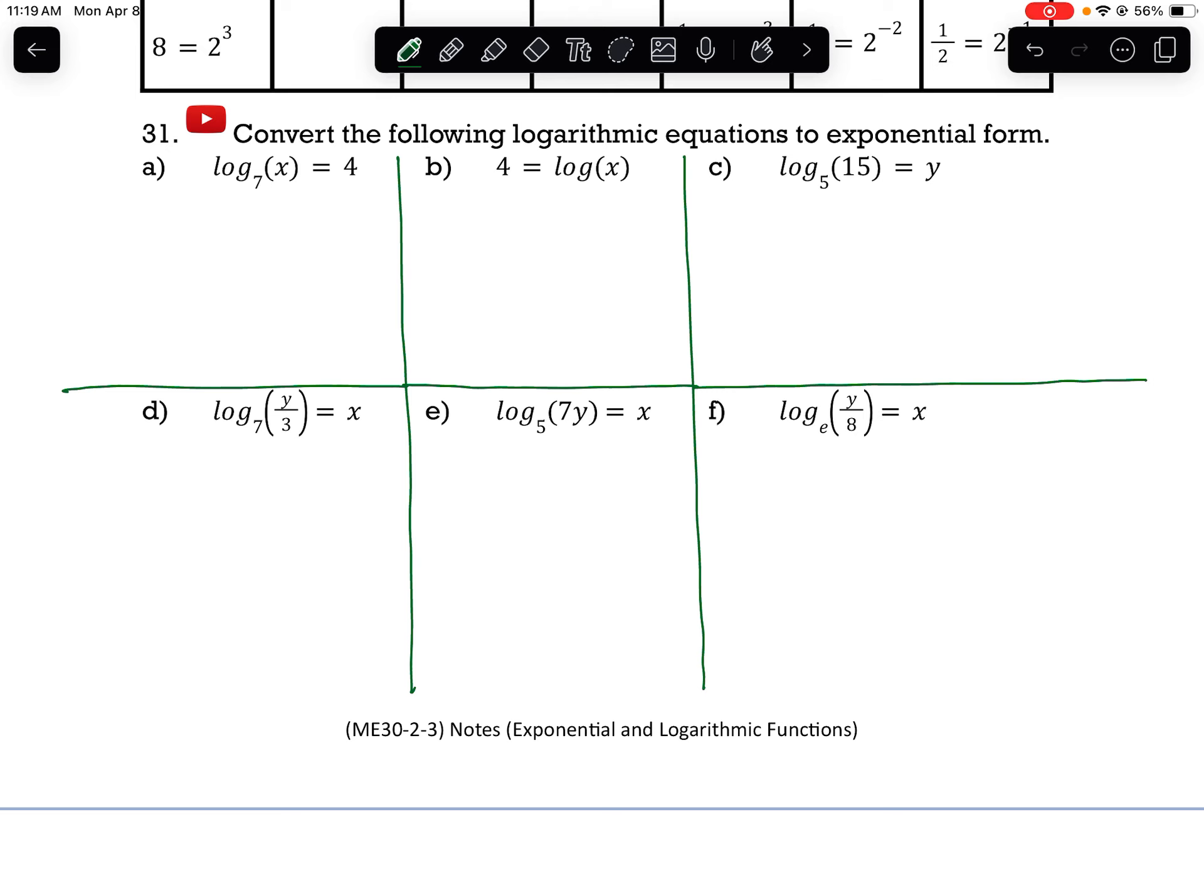Part A gives us log base 7 of x equals 4. And so our argument is going to become our solution in exponential form. Our base remains the base, and the solution of the logarithmic form becomes the exponent.